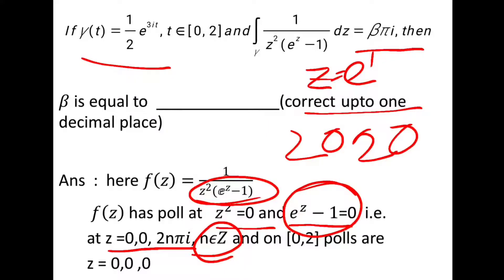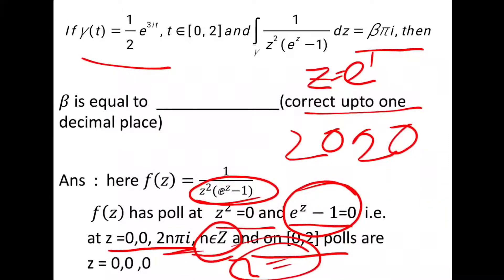We know that this function has poles at z = 2nπi, but on the closed interval [0,2], the poles are 0, 0, and 0, the only pole for n = 0.